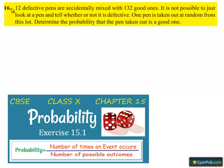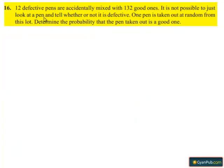Coming to question number 16. 12 defective pens are accidentally mixed up with 132 good ones. It is not possible to just look at a pen and tell whether or not it is defective. One pen is taken out at random from this lot. Determine the probability that the pen taken out is a good one.